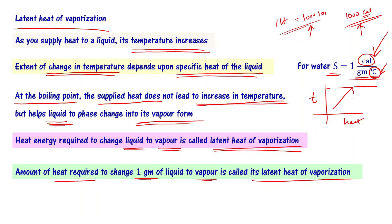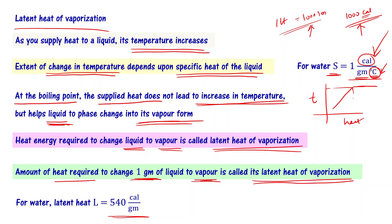The latent heat of vaporization is the amount of heat required to change one gram of liquid to its vapor. For water, the latent heat of vaporization is 540 calories per gram. Note that specific heat of water is 1 calorie per gram per degree centigrade, while the latent heat is 540 — it is so much more heat.